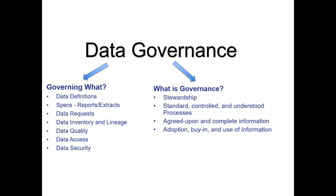There's data quality — the rules around your data and the quality of it. Data access — how does one get to the data, where does it live, what's the process of getting access, who can get a hold of it and who can't. And data security — managing the control of that access, but also once people have access, what are they allowed to do and not to do. A lot of times people start or come at these problems from just one of these areas.